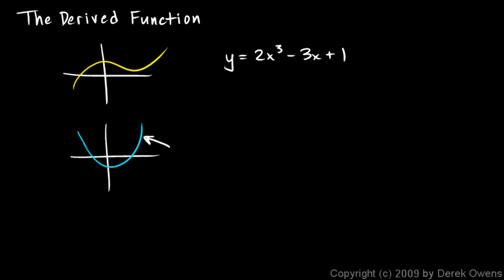But what if we want to actually find this derivative function? We could start plotting points by finding the difference quotient at a bunch of points, but that would be very tedious and time-consuming — we can't do it for an infinite number of points. What we want to do is find the actual mathematical definition not for the original function, but for the derivative of that function. It seems plausible such a function should exist, since the original function has a slope at any given point.